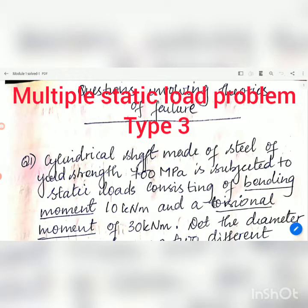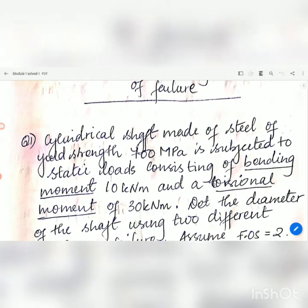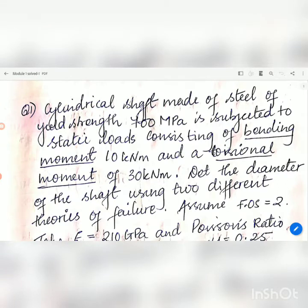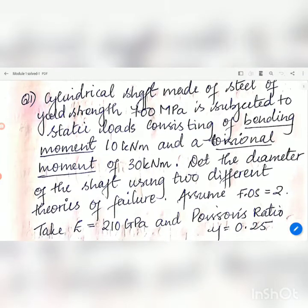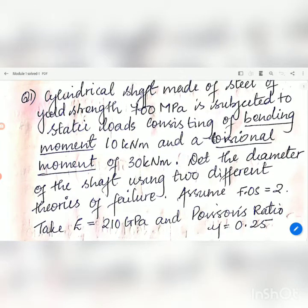A cylindrical shaft made of steel of yield strength 700 MPa is subjected to static loads consisting of bending moment 10 kNm and torsional moment of 30 kNm. Determine the diameter of the shaft using two different theories of failure. Assume factor of safety FOS equal to 2.